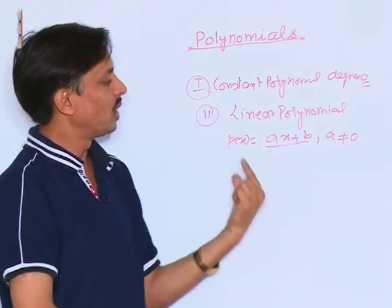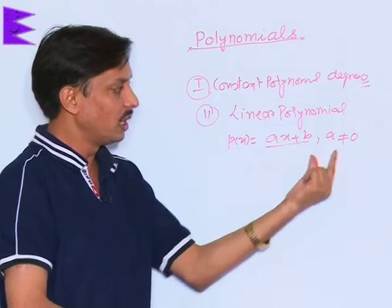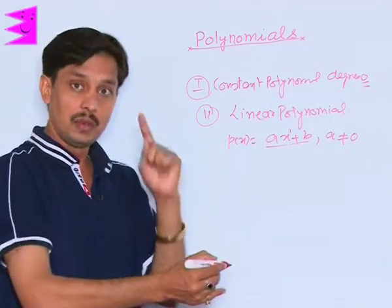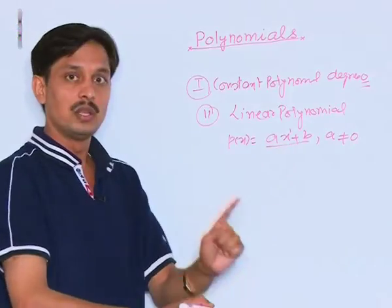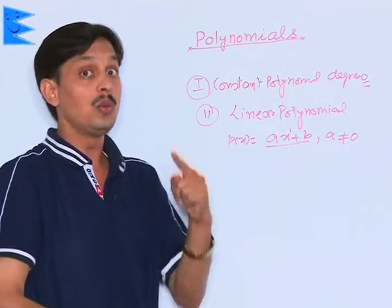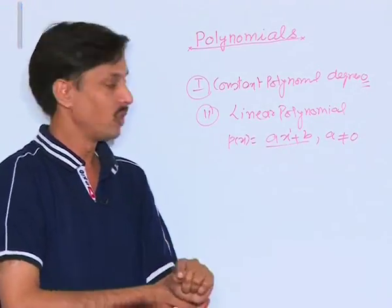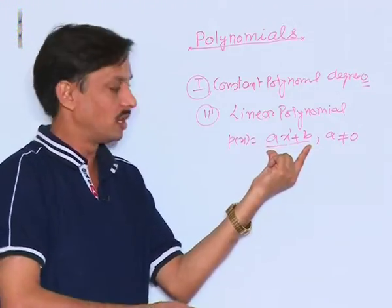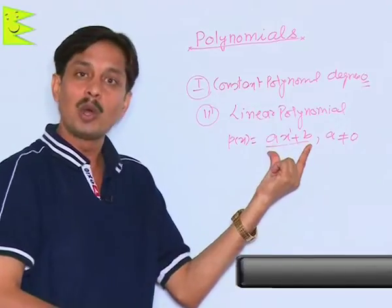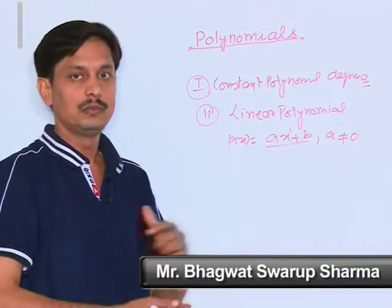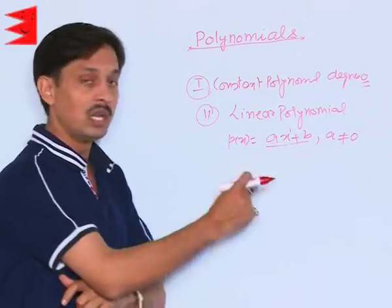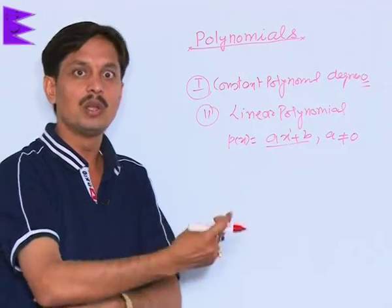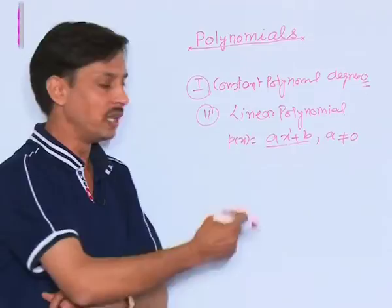The standard form of the linear polynomial is ax + b, provided a is not equal to 0, and its degree is 1. Since the degree is 1, there is only one value of x which can make this polynomial equal to 0 — meaning the number of zeros is always equal to the degree.